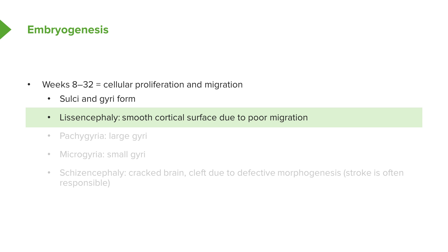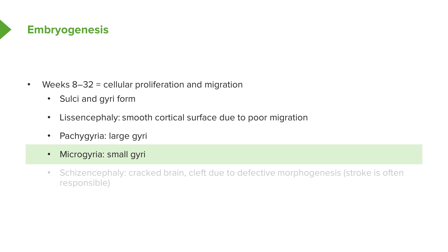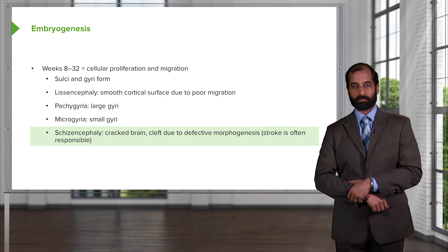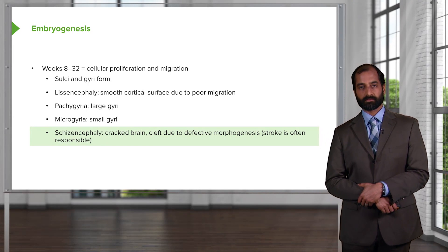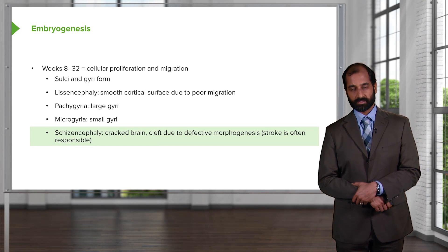Still in weeks eight to 32, we also have pachygyria, which refers to large gyri, and microgyria, which refers to small gyri. Then there is schizencephaly — literally a cracked brain — a cleft due to defective morphogenesis, for which stroke is often responsible. Think of schizophrenia meaning a broken or cracked mentality; schizencephaly is literally a cracked brain. Fascinating!